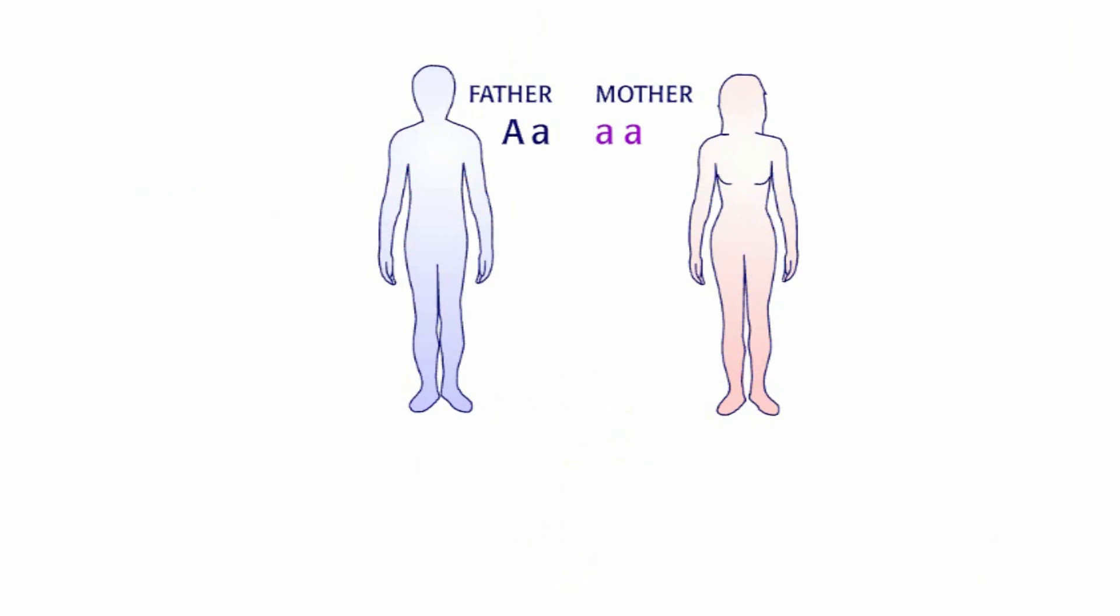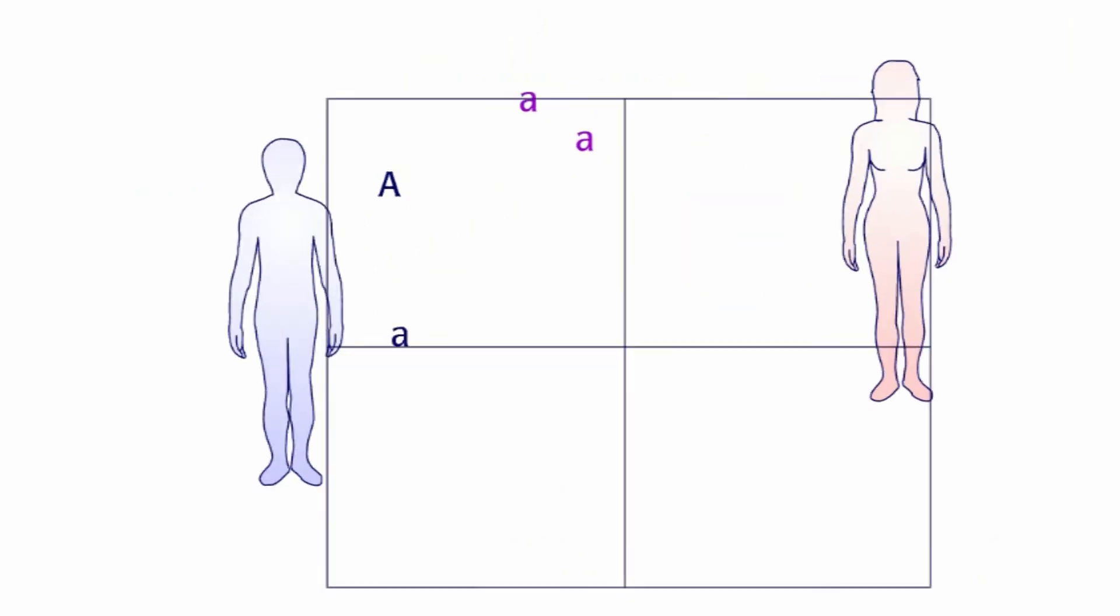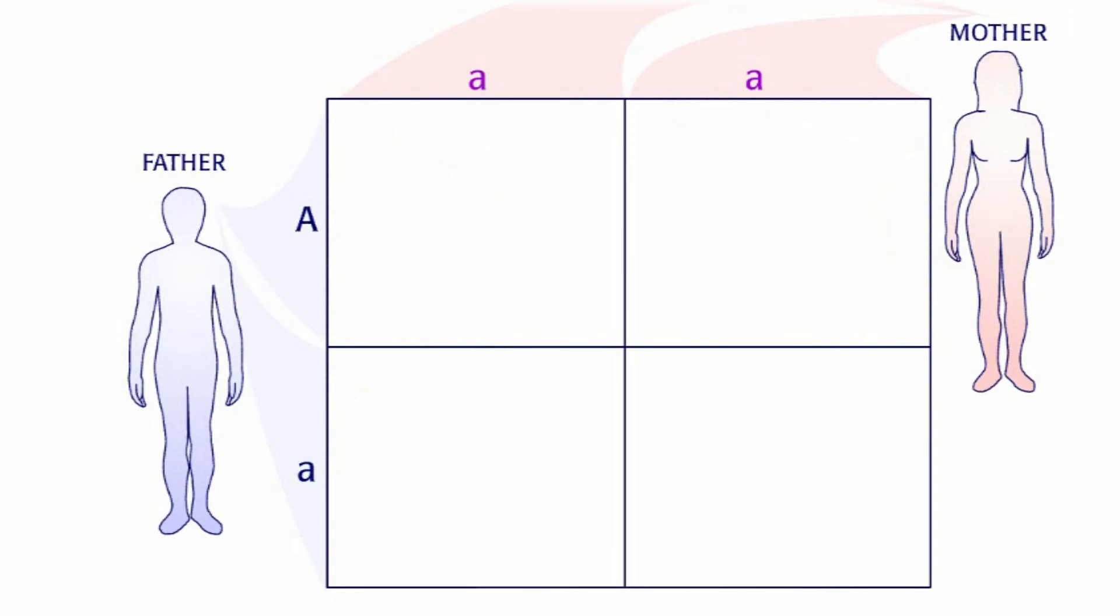A child whose parent has a mutation in either of the presenilin genes or the APP gene has a 50 percent chance of inheriting the mutated gene and developing Alzheimer's disease.